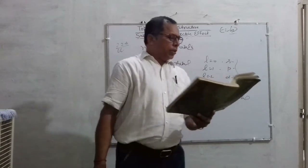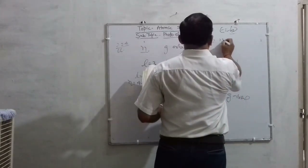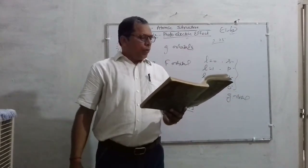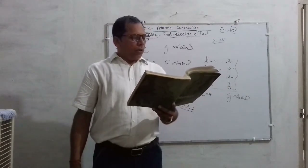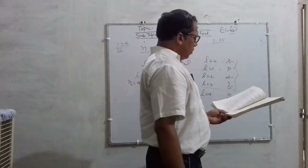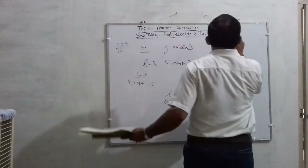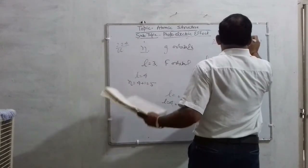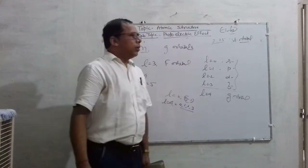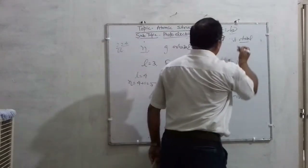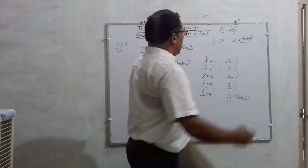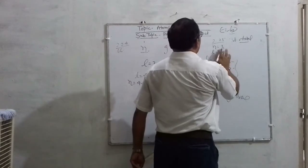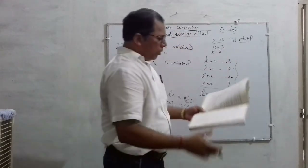Question number 2.25: An electron is in one of the 3D orbitals. Give the possible values of n, l, ml, and ms. For 3D orbital, no doubt N is 3. Here it is D, so L will be 2. The value of ml will be: minus 2, minus 1, 0, plus 1, and plus 2.